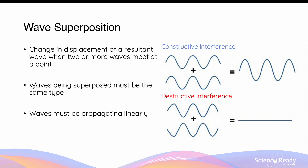Waves that are being superposed or combined together must always be of the same type. So you cannot combine a light wave with a sound wave — you can only consider the effects of superposition when looking at multiple sources of the same wave type. At a high school level, for HSC physics, we usually go through scenarios of wave superposition by assuming that the waves are propagating linearly before they meet at a certain point.